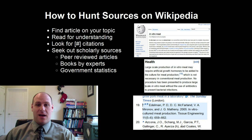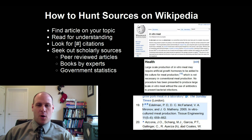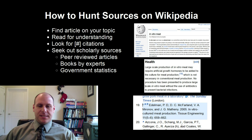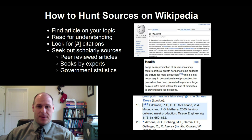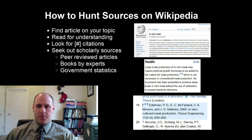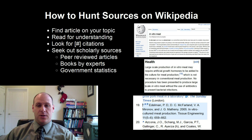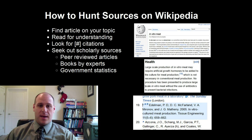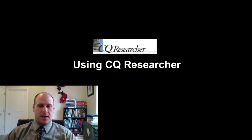I want to talk about the process of hunting down sources on Wikipedia. The way this works is you've got a topic you're interested in researching — find an article about that topic on Wikipedia. First, read through that article, gain understanding, and pay close attention to the brackets. As you can see in the presentation, there's this in vitro article as an example. Every time claims or facts are given, you've got a citation. If you click on that citation, it brings you down to a reference page where you can actually see some good journal articles. As you look at those sources, look for the ones that fall into the green category — journal articles, books written by subject experts, government statistics.